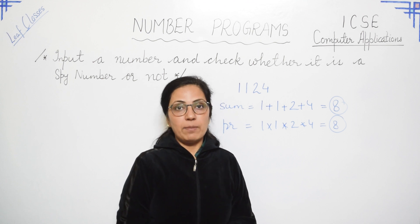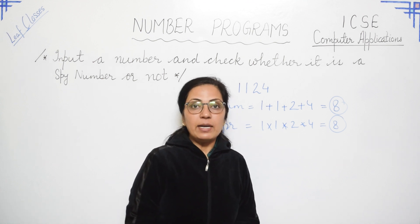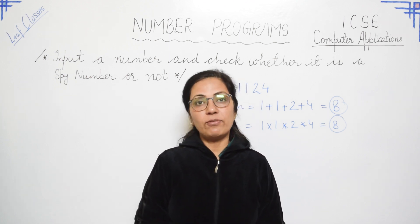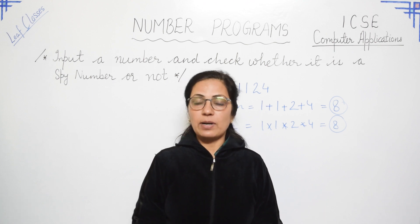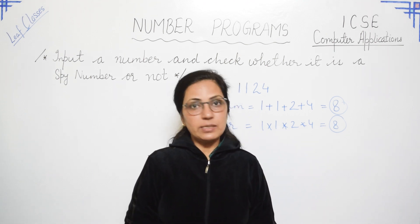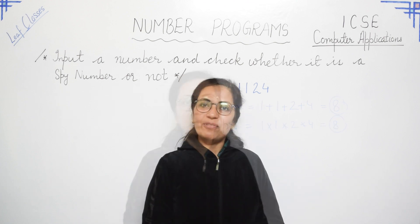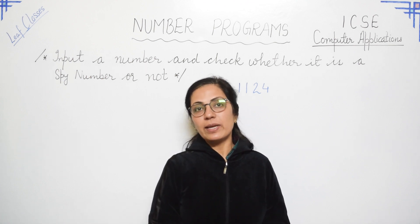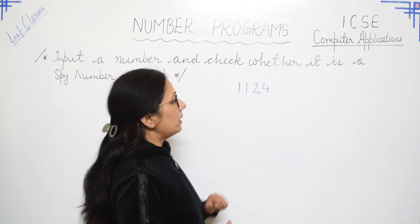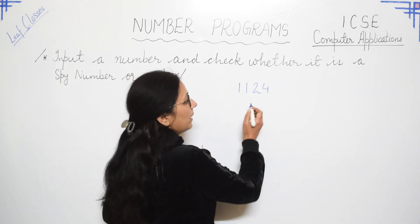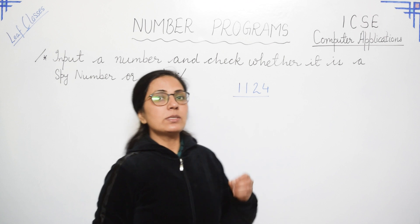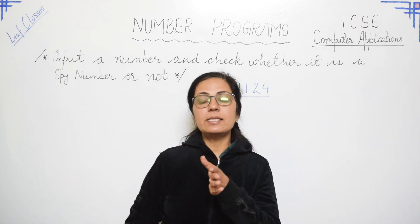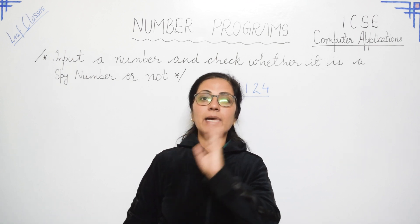So 1124 is known as a spy number. Different definitions are there in the PDF link — today you will get definitions of different types of numbers. Try doing those programs, and in case of any problem you can comment in the comment section. Before doing the program, I'll explain you the logic, and once the logic is clear it becomes very easy to write the program. When the number is there, there is no method to extract digit by digit from left to right.